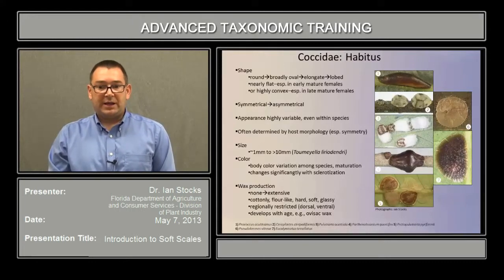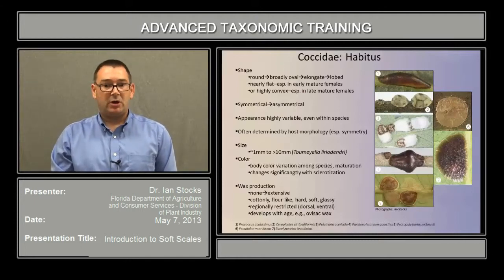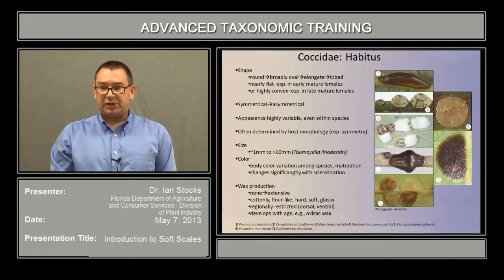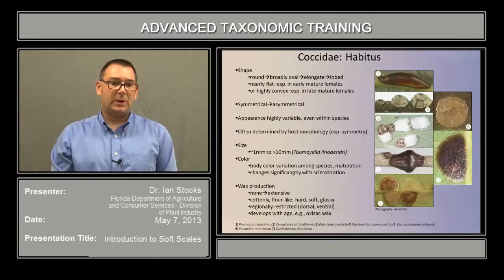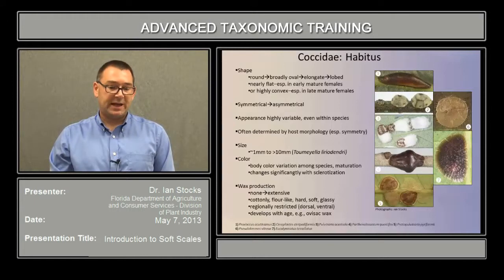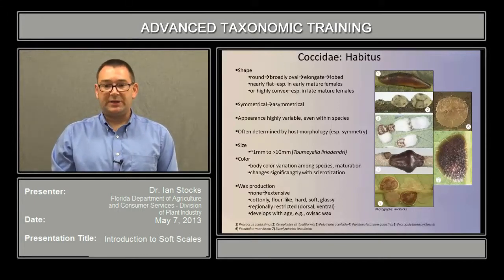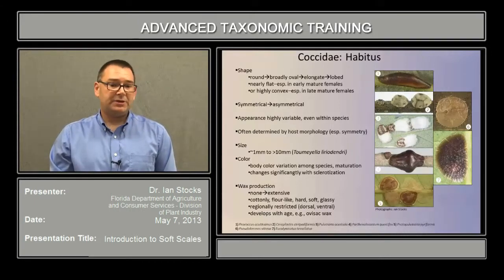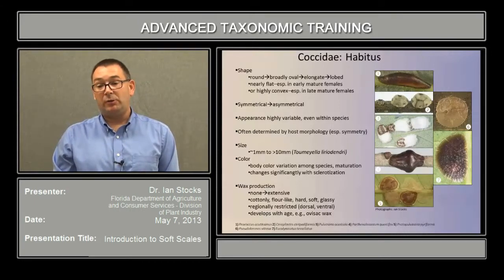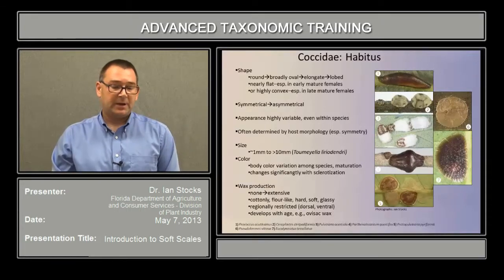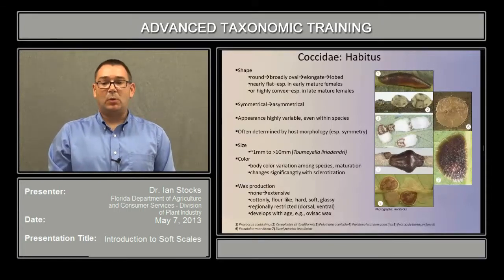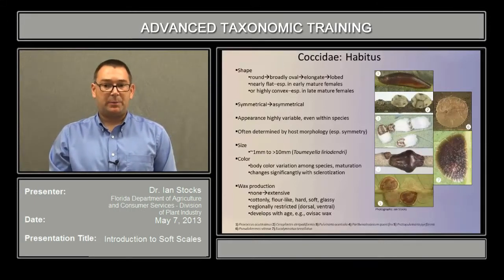In figures 1 and 4, those are both very mature adult females that have undergone extensive sclerotization. Wax production can vary from essentially no wax at all to very extensive, and the texture and composition of the wax can vary from cottony, especially in the ovasac type of wax, to flower-like, to hard, soft, or even glassy. It can be regionally restricted on the body — for instance, produced only on the dorsum or the venter. And some wax types develop with age, for instance the wax produced for ovasac production.